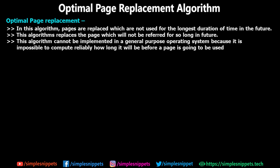As the name suggests, in this algorithm pages are replaced which are not used for the longest duration of time in the future. This means the algorithm looks ahead into the timeline and checks which pages are going to be needed next, and replaces that page which is not going to be needed for the longest amount of time. In other words, the algorithm replaces the page which will not be referred to for the longest duration in the future.